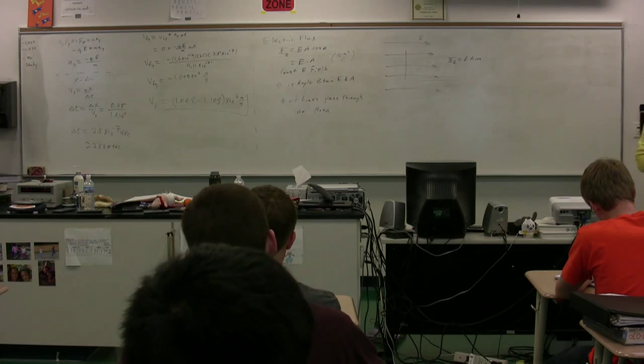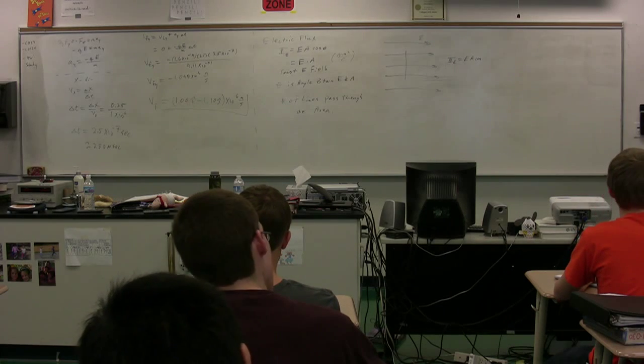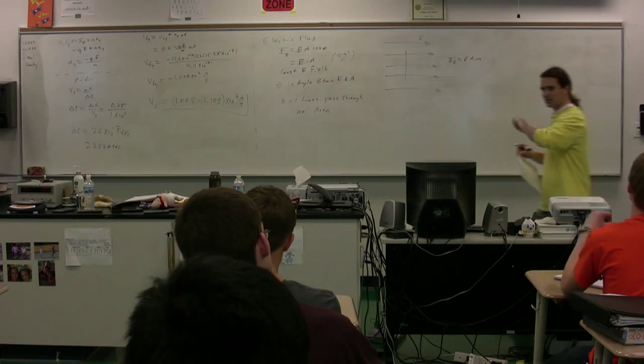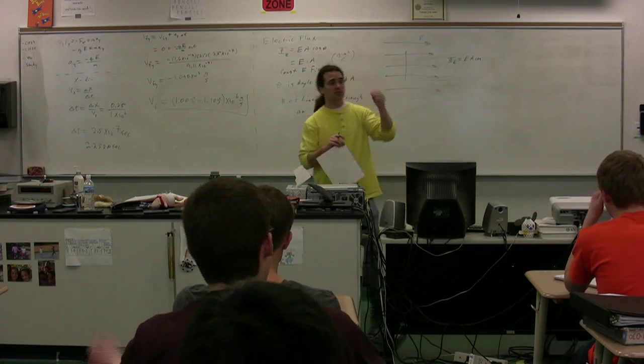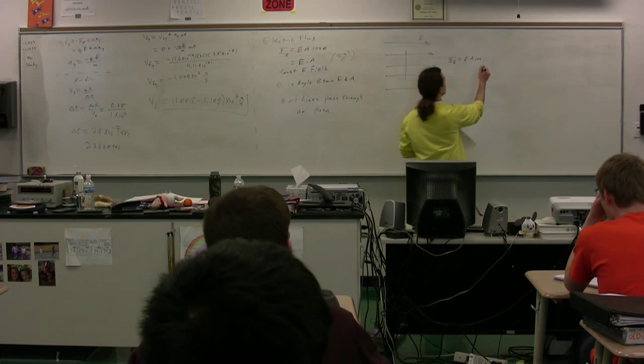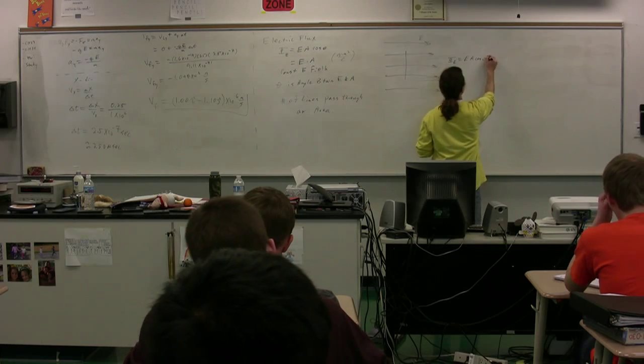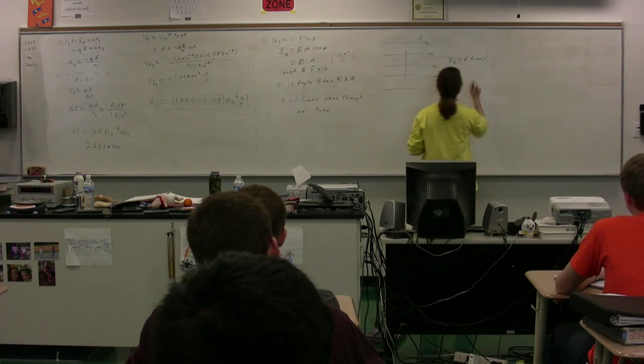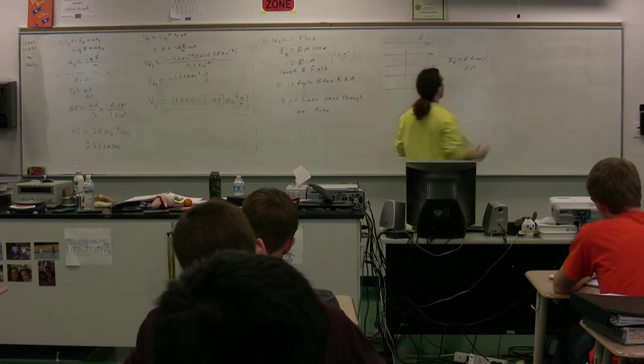the electric flux in this particular case would be equal to E times A times a cosine of what would be the angle here then? What's that? Zero or? 180 degrees. We'll get to whether it's zero or 180 degrees in just a minute. We're not quite there yet. So we'll just put zero for right now, and that's fine. So this has an electric flux that's equal to E times A.